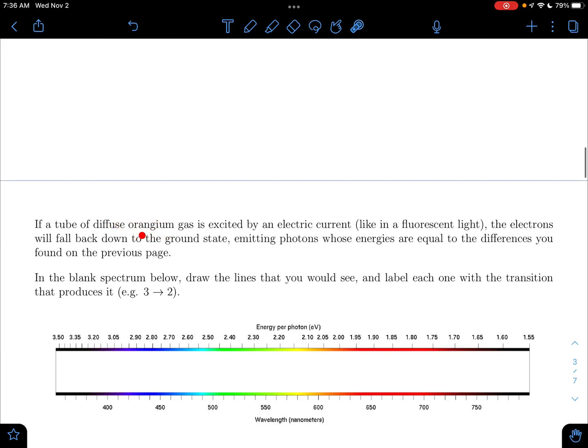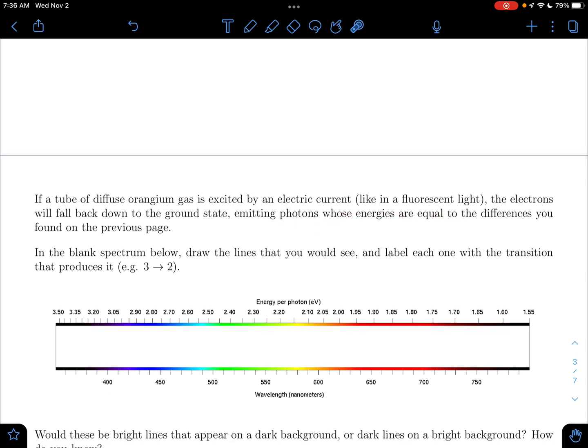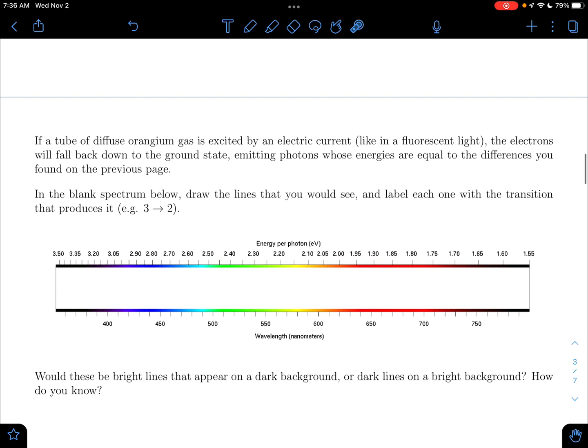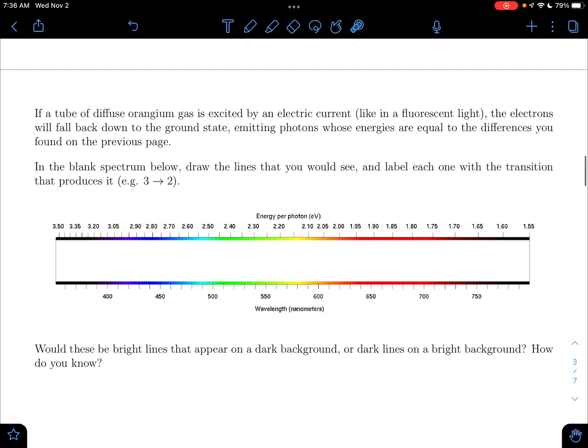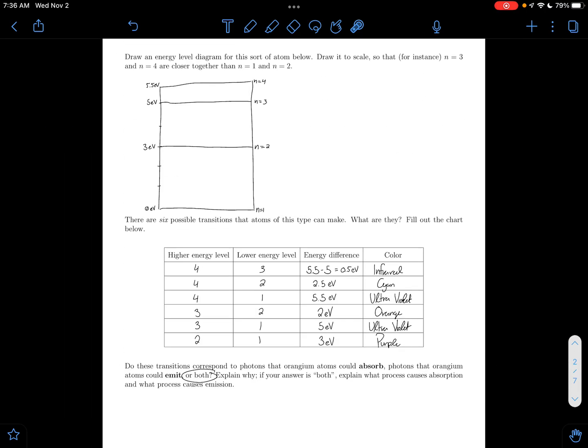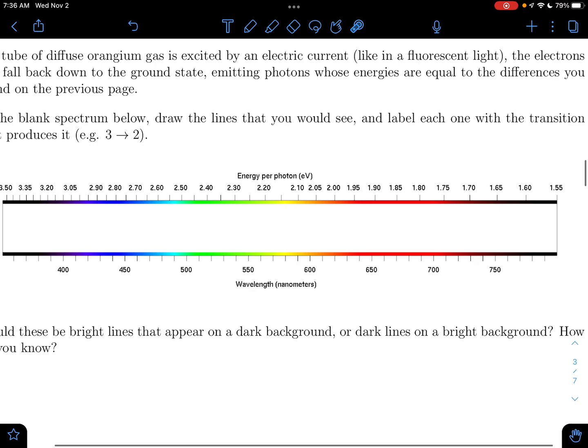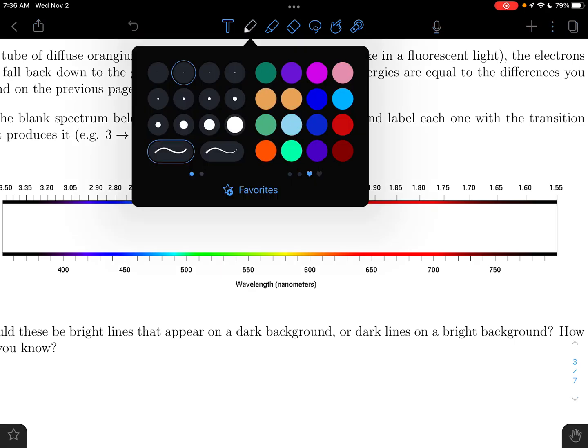And now we have our tube of orangium excited by an electric current, like a fluorescent light, or like those tubes that we've been working with in lab that we make you turn off so they don't burn out. We're running electric current through various gases and seeing the emission spectra with our plastic spectrometers, those triangle things. So now we're going to draw the lines that we would see. We said that three of them aren't going to be visible. We can't see ultraviolet and we can't see infrared, unless you're a snake, because I think snakes can see infrared, but we're not snakes.